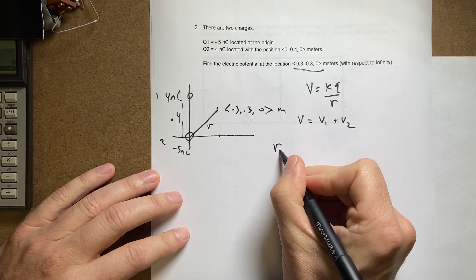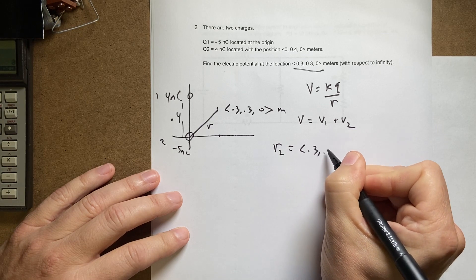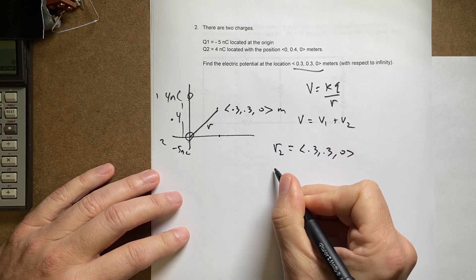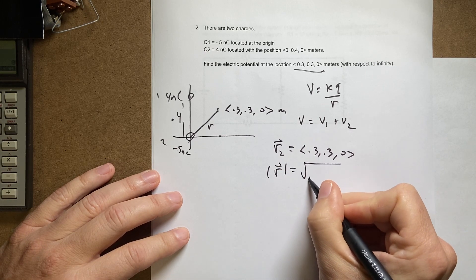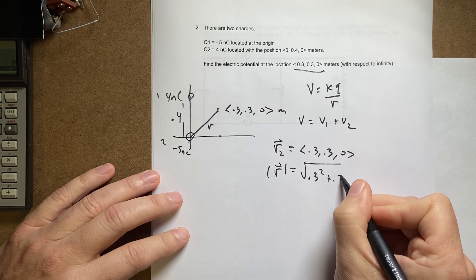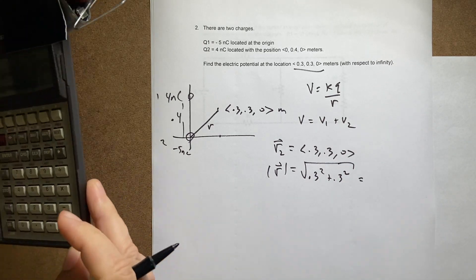I need the magnitude. So R2 is going to be equal to the vector (0.3, 0.3, 0). The magnitude of that is going to be equal to the square root of 0.3 squared plus 0.3 squared plus zero squared. So let's just get that value. This is R2.